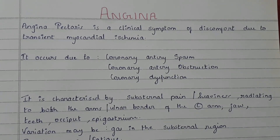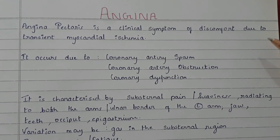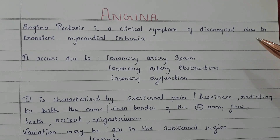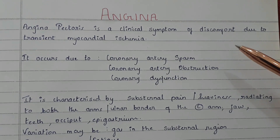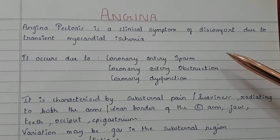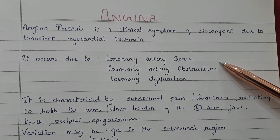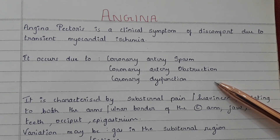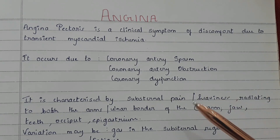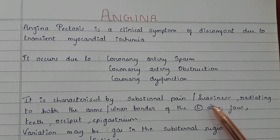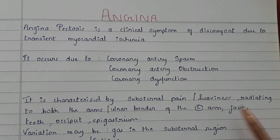Angina Pectoris is a clinical symptom of discomfort due to transient myocardial ischemia. It occurs due to coronary artery spasm, coronary artery obstruction, and coronary dysfunction. It is characterized by sub-sternal pain or heaviness radiating to both the arms.